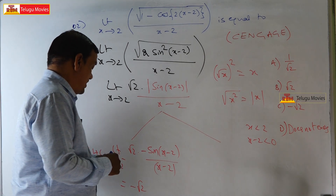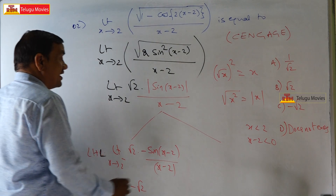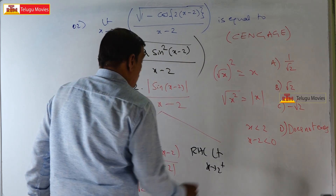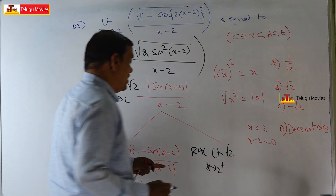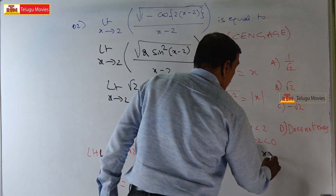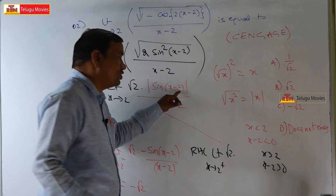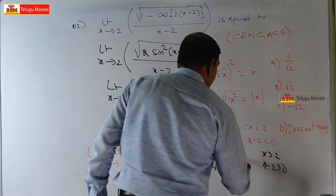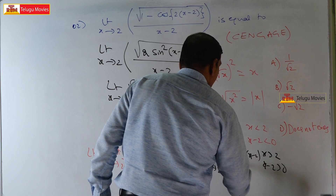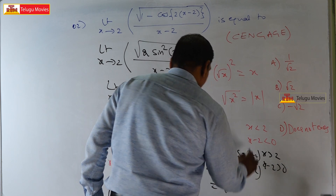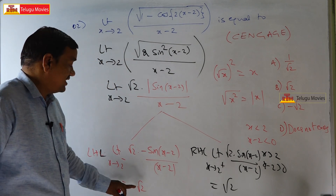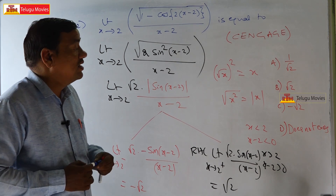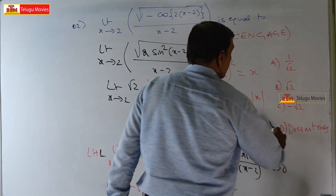For the right-hand limit: x→2⁺ means x > 2, so x - 2 > 0, meaning x - 2 is positive. Therefore sin(x-2) is also positive, and the modulus stays as is: sin(x-2)/(x-2). This answer is √2. Since the left-hand limit (-√2) is not equal to the right-hand limit (√2), the limit does not exist.